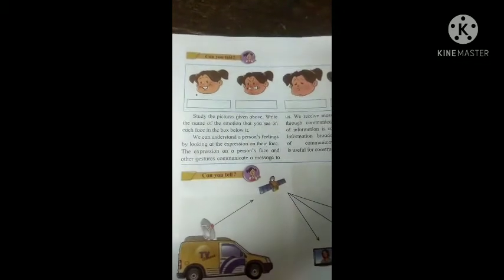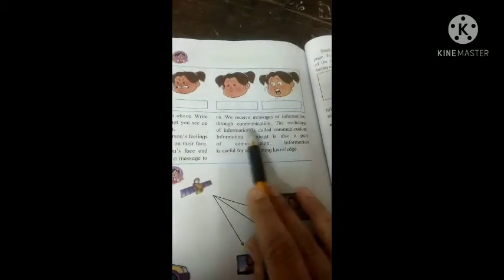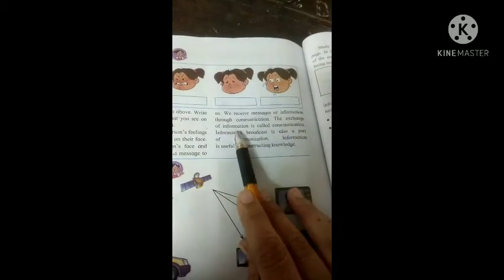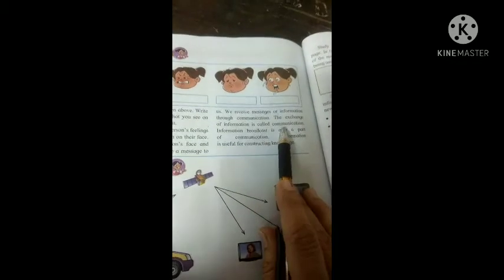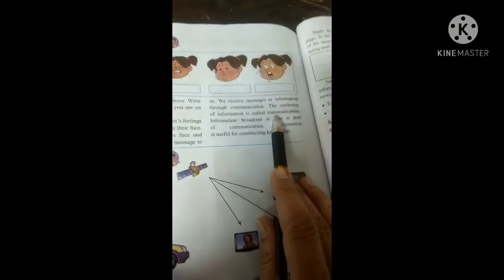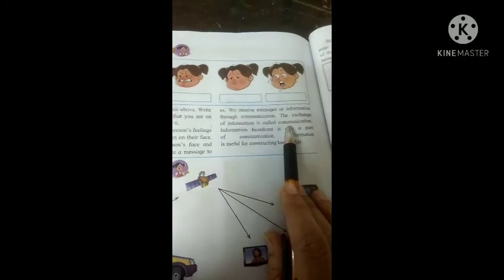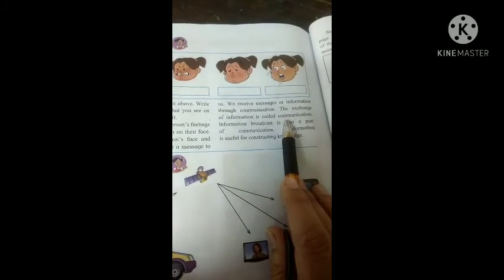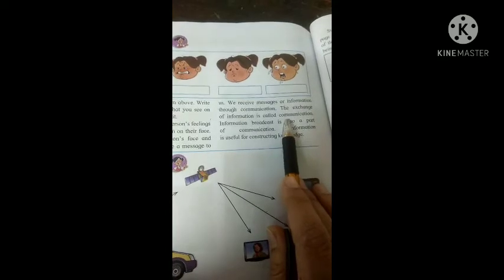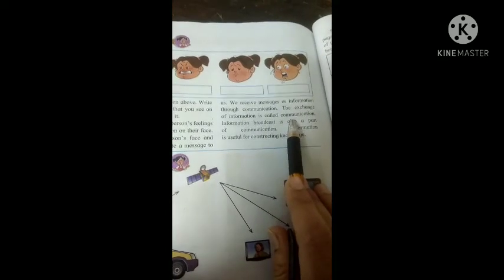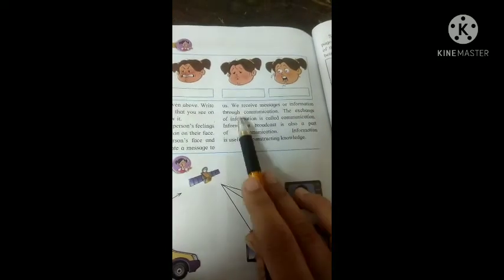We receive messages and information through communication. The exchange of information is called communication. What is the exchange of information? One person tells someone, one person gives information to another.